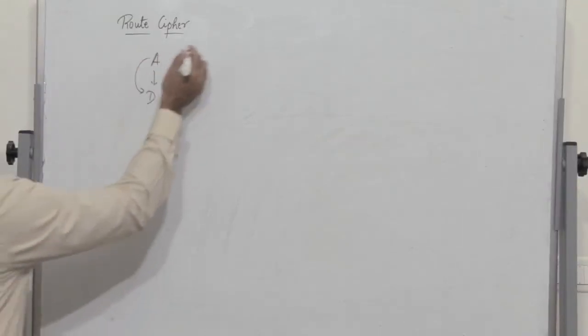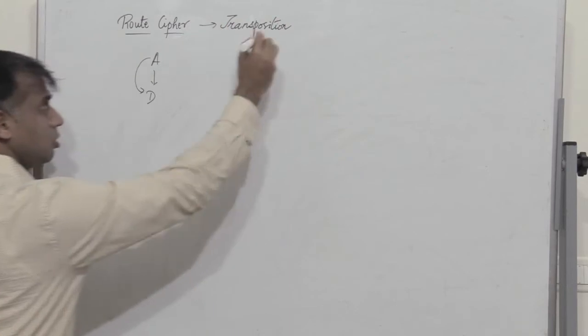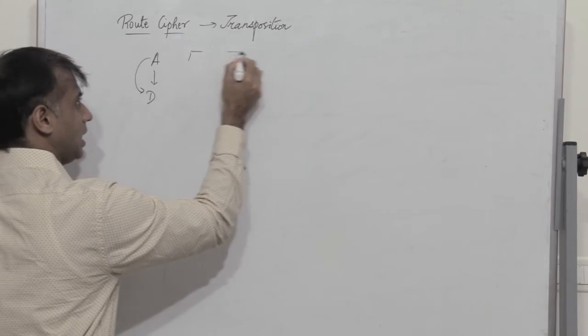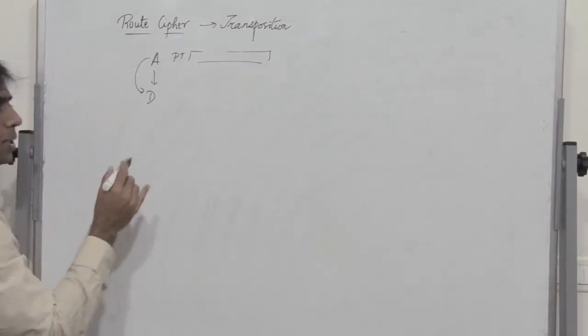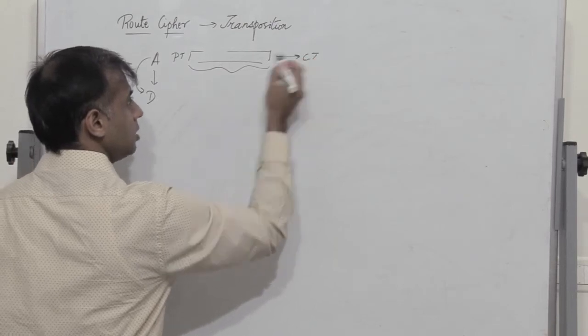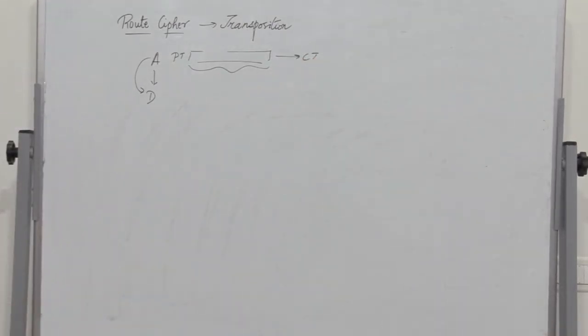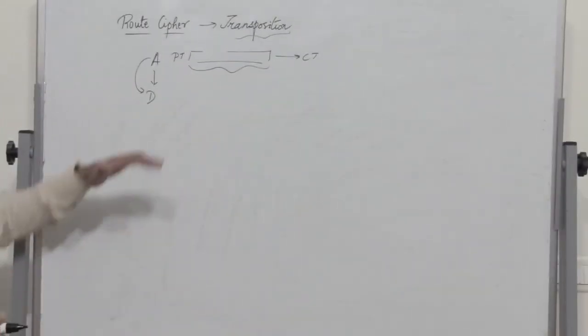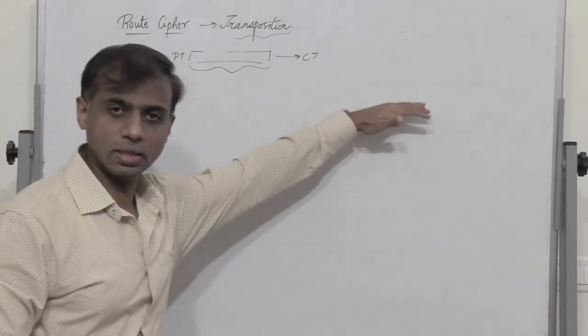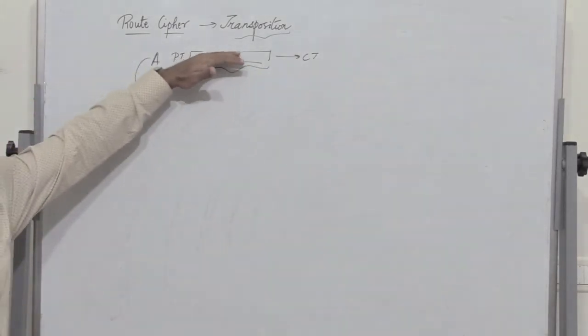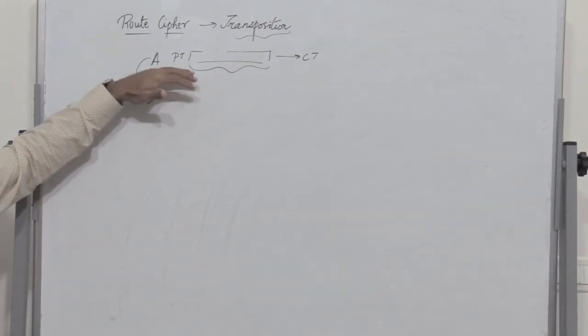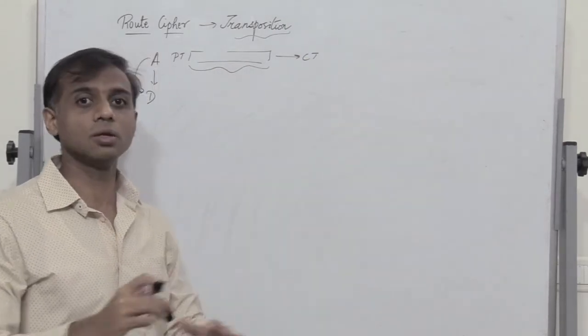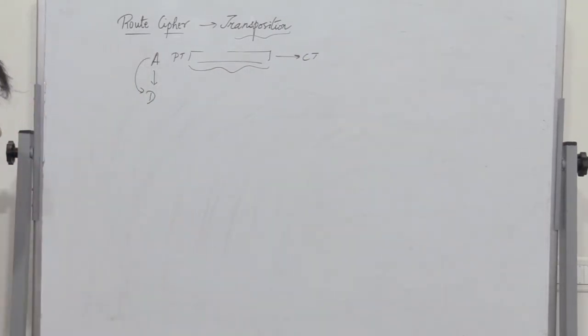But when we talk about a transposition cipher, there is no substitution. The alphabets of the plain text remain as it is, but the order in which they appear in the cipher text changes. So that is the basic definition of a transposition cipher. When we are talking about classical encryption techniques and a transposition cipher, then the alphabets present in the plain text remain the same in the cipher text also, but the order is different.